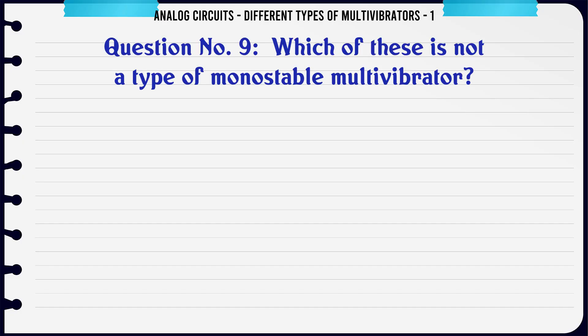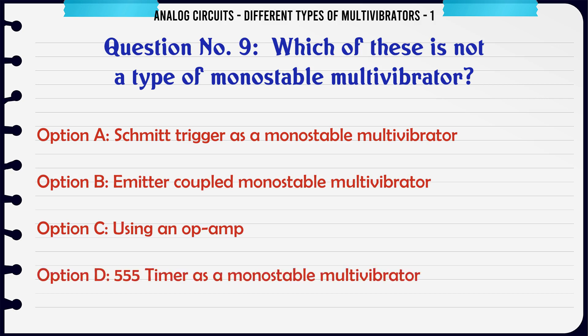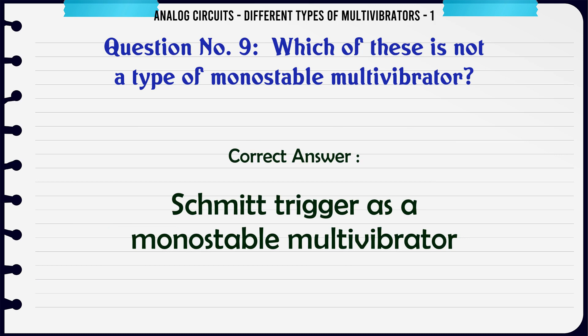Which of these is not a type of monostable multivibrator? A: Schmitt trigger as a monostable multivibrator. B: Emitter coupled monostable multivibrator. C: Using an op-amp. D: 555 timer as a monostable multivibrator. The correct answer is: Schmitt trigger as a monostable multivibrator.